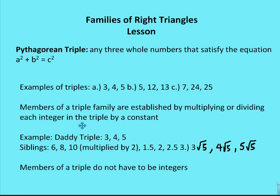So as long as the triple is multiplied by a constant of either a number greater than 1 or a number less than 1, and all values are multiplied by the same constant, they come from the same triple family. Another example would be 3 root 5, 4 root 5, 5 root 5. So it doesn't have to be a whole number that you're multiplying each of the members of the triple family by. Members of a triple don't have to be integers, but the base triple does have to be an integer as defined by the family.